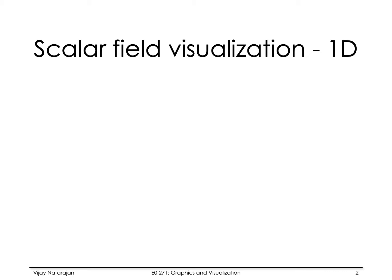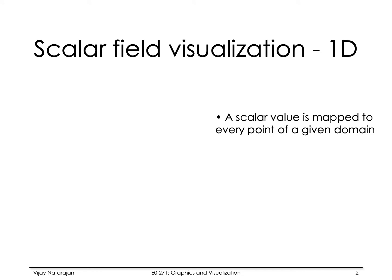Let's start with data defined over a 1D domain - 1D scalar fields. It is not surprising that we visualize 1D data by mapping every point to a point in a 2D domain, something we have seen since our school days. Let's try to introduce this problem more formally. A scalar field f is a real-valued function which maps every point on the domain to some real value. We talk about d as a one-dimensional domain, for example a line.